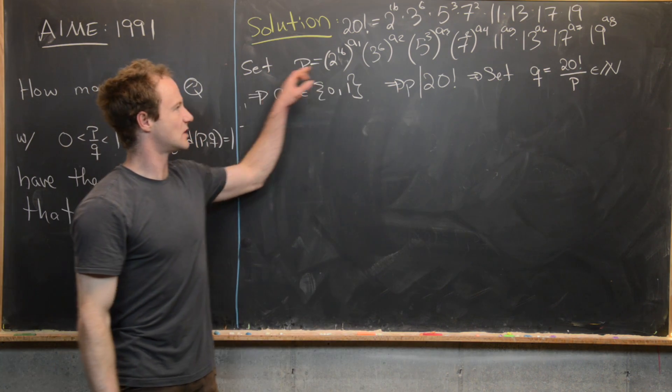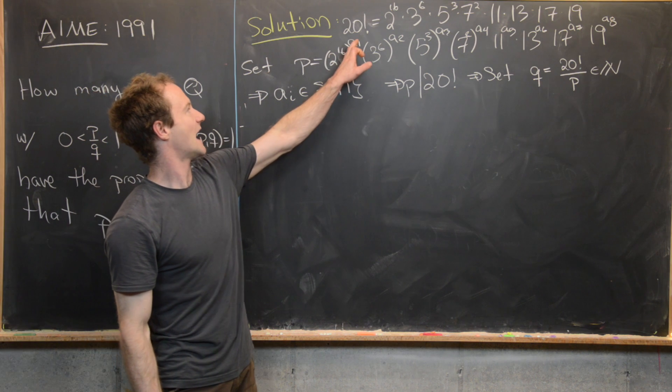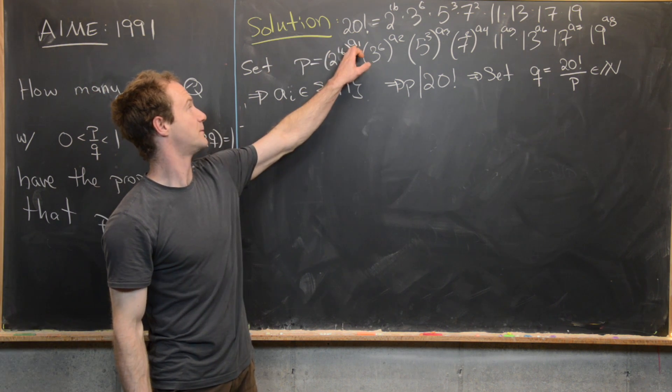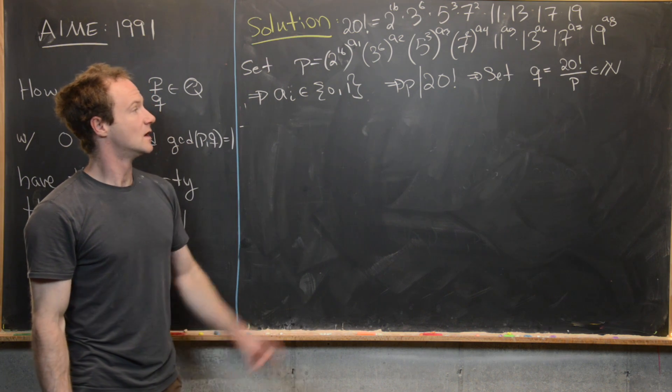And Q has a similar factorization to P, except for the fact when the exponents in the primes for P are 0, they're 1 for Q, and vice versa.